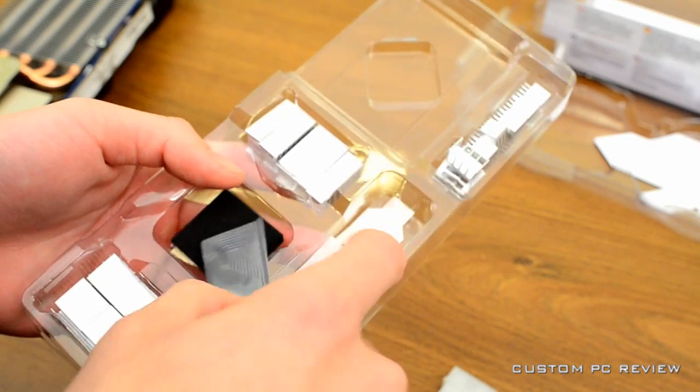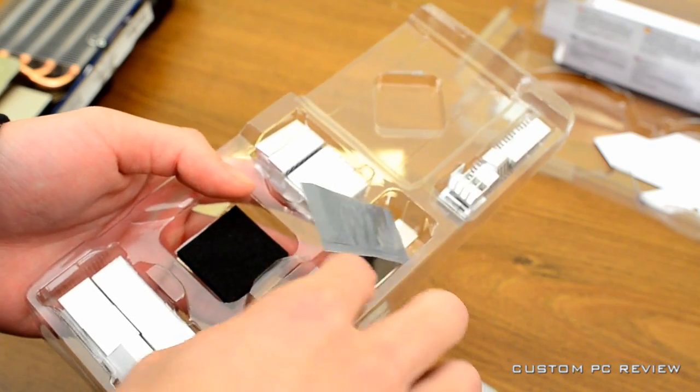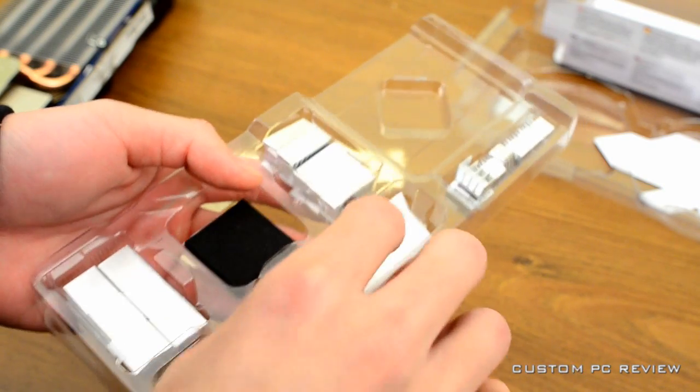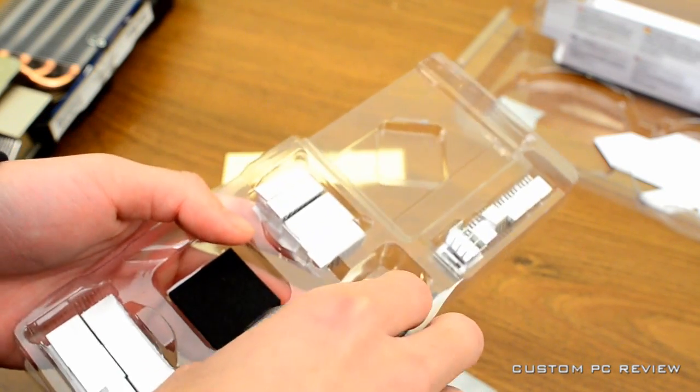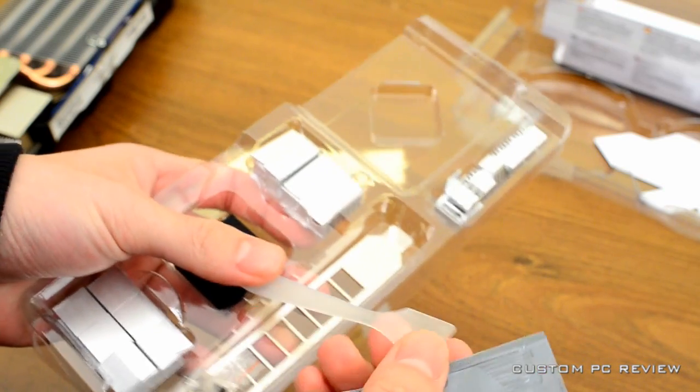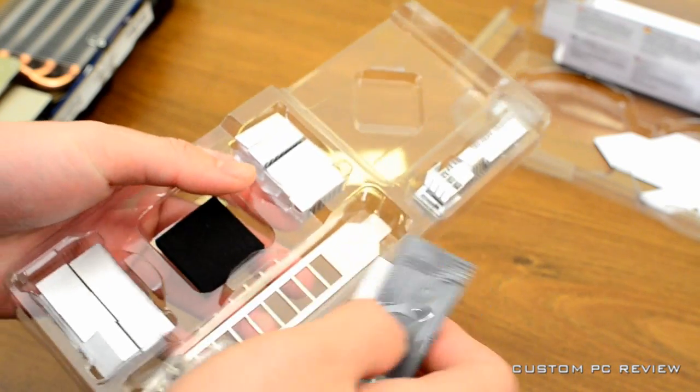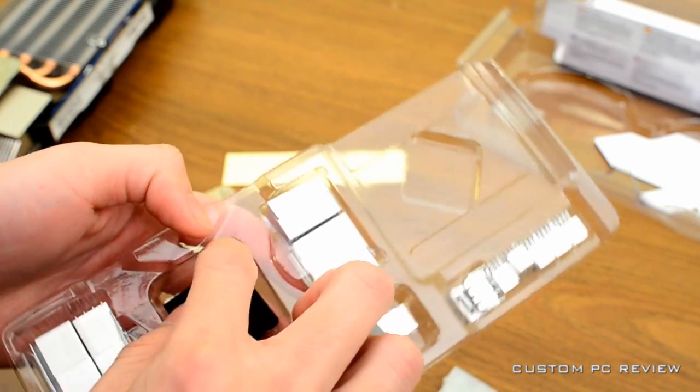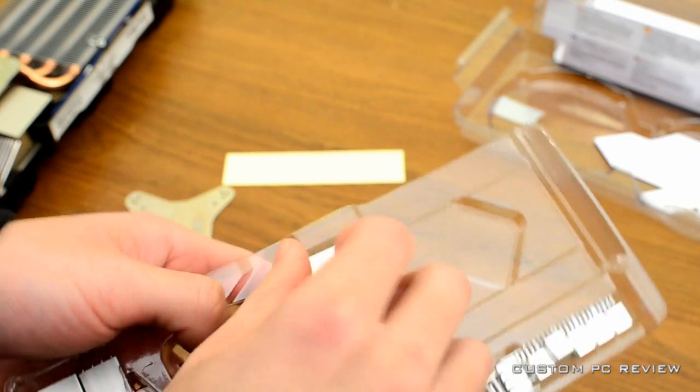There you've got the thermal glue. I believe on this one you use a thermal glue by mixing those two packets together and that creates like a sticky compound that you can kind of paste on all your VRMs and then you can stick those VRM pieces on.